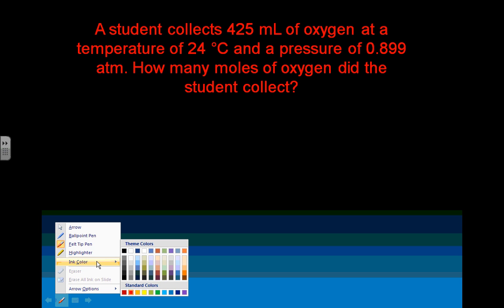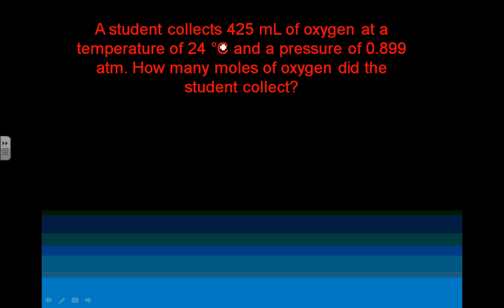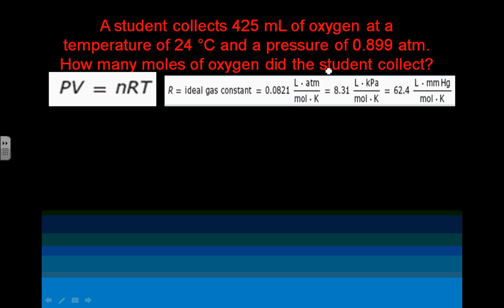Let me change my color here. We're almost there. The student collects 425 mils of oxygen. That's volume at a temperature of 24 degrees Celsius. I'm going to have to change that to Kelvin. And a pressure of 0.899 atm. How many moles, so N, of oxygen that the student collects? Well, there's definitely not a change here. Nothing indicating a change. I have pressure, volume, temperature, and moles. When you look at the equations available, the only one possible is... Ta-da! PV=nRT, or the ideal gas law.